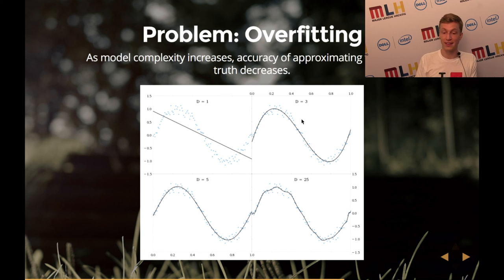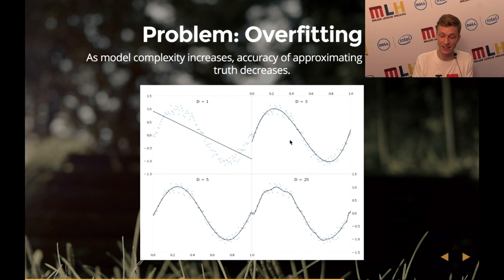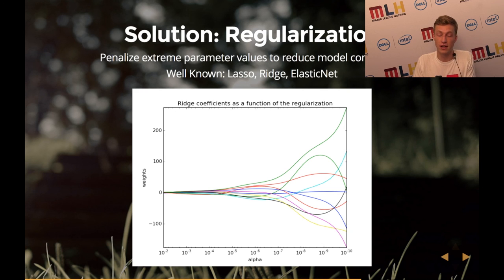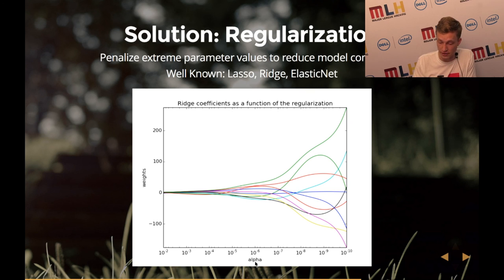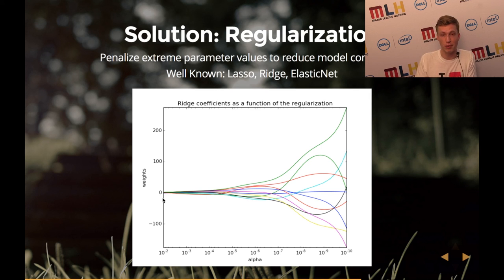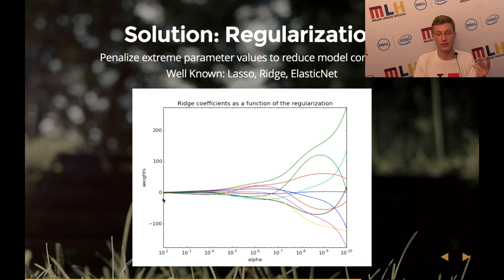The important thing to understand: when you're overfitting, you get lower error on training data than when approximating ground truth, because it fits the training data super tightly. To fix this you regularize your parameters. You can Google lasso, ridge, or elastic net — these are various regularization methods. A higher regularization parameter forces weights toward zero, giving you a simpler model — instead of 10 parameters, some coefficients go to zero and you have just two.